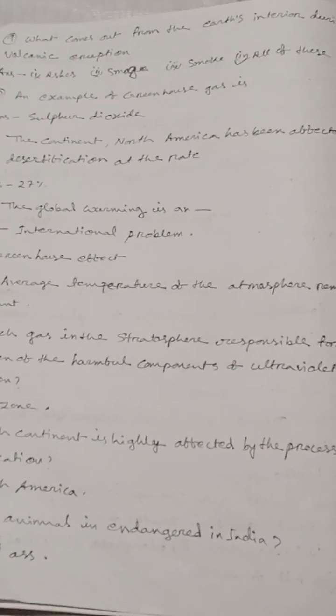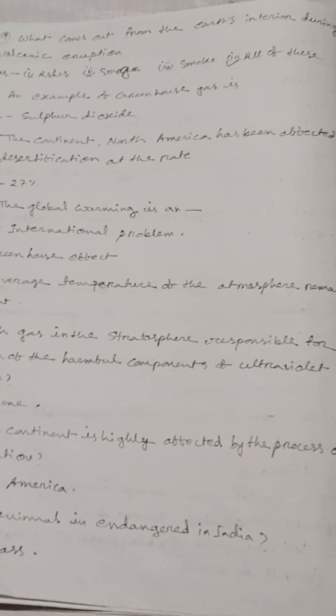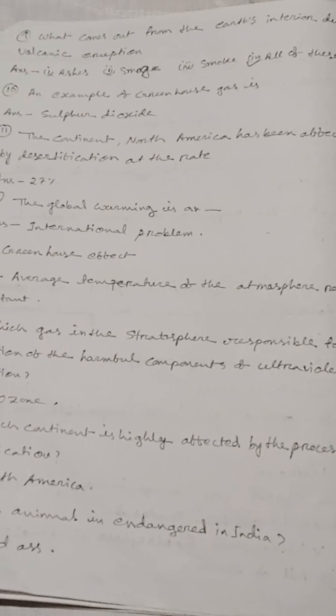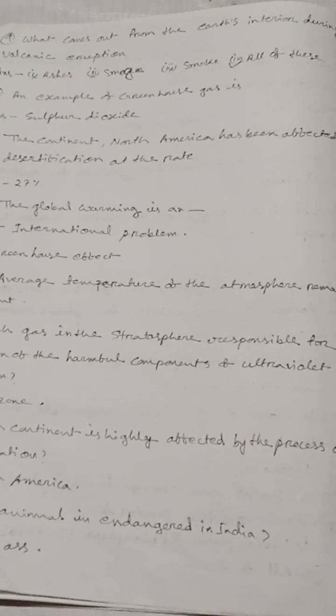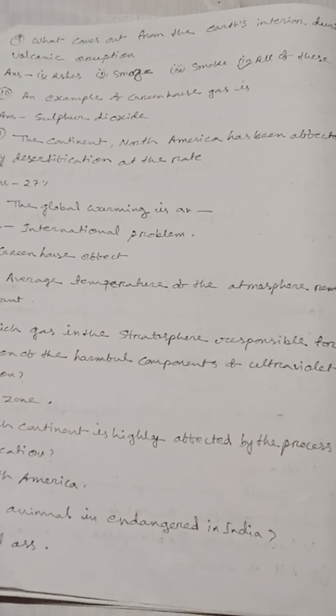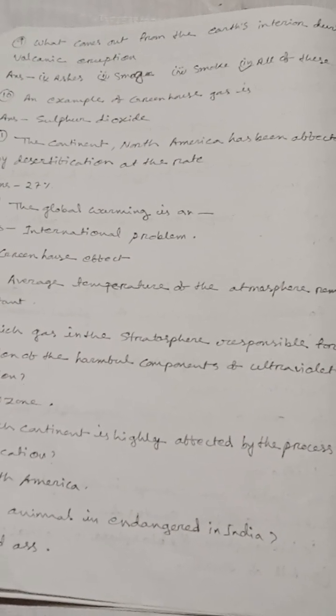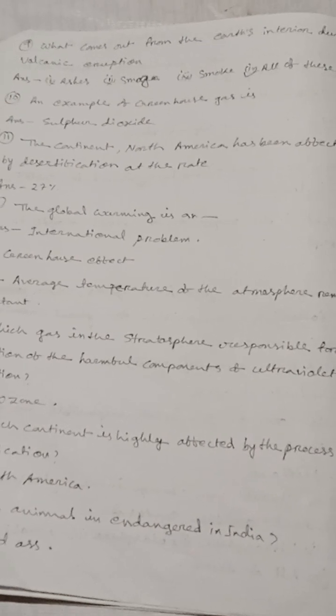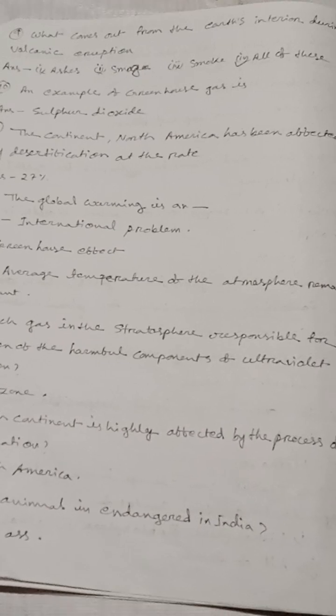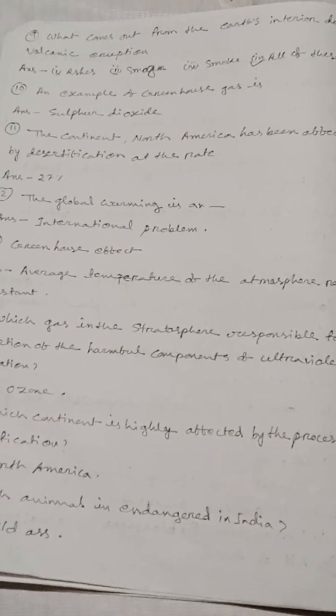Question No. 8: What comes out from the earth's interior during volcanic eruption? Options are ashes, smoke, and all of these. Option 4 is correct — all of these. Question No. 10: An example of greenhouse gas is sulfur dioxide.